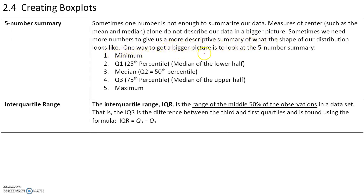One way to get a bigger picture is to look at the five-number summary. The five-number summary consists of the minimum, which is the smallest value in a data set; Q1, or the 25th percentile; Q2, the median, or the 50th percentile; Q3, or the 75th percentile; and the maximum, which is the largest value in a data set.